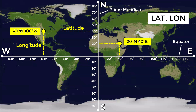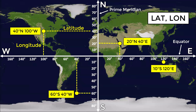For another position, the latitude would be 20 degrees north and the longitude 40 degrees east. For another point, the coordinates would be 10 degrees south and 120 degrees east. And finally, the last point has coordinates of 60 degrees south and 40 degrees west.